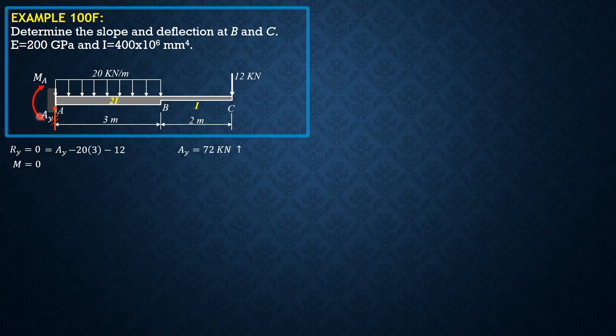Then moment equals zero or summation moment equals zero. Likewise, positive as assumed. So MA equals MA plus 20 times 3 times 1.5 plus 12 times 5. So MA is equal to negative 150 kilonewton meter. Take note that for span AB, the moment of inertia is 2I. For BC, moment of inertia is I.